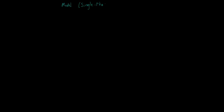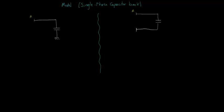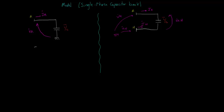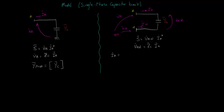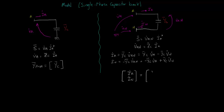We can also model a single-phase capacitor. It can be connected between a phase and the ground, or between any other nodes that you wish, for example between a phase and the neutral. In the first case, the complex power is simply Va times Ia conjugated, and the Y-primitive matrix is equal to Yc. In the second case, the complex power is Van times Ia conjugated. Ia can be written as Yc times Va minus Yc times Vn, and In is simply minus Ia. Then, arranging these two expressions in matrix format, we find the Y-primitive matrix.